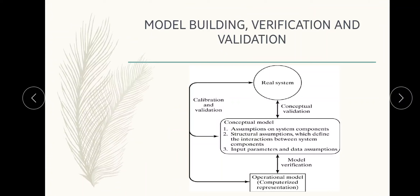The second step in model building is the construction of a conceptual model — a collection of assumptions on the components and structure of the system, plus hypothesis on the values of the model input parameters. The third step is the translation of the operational model into a computer recognizable form, the computerized model. So model building, verification and validation has three steps: first is the real system, second is the conceptual model, and the third is the operational model.